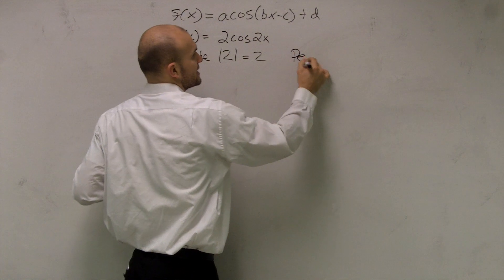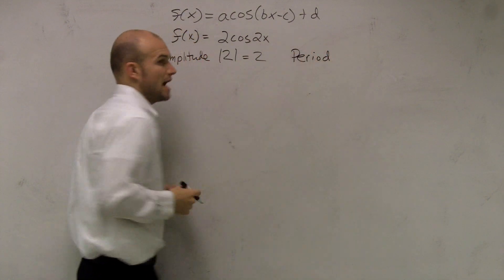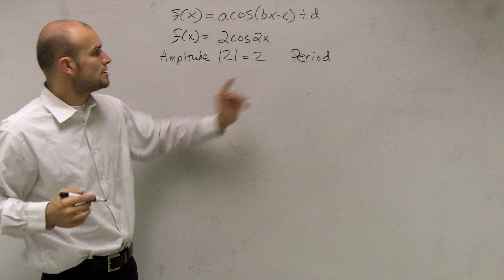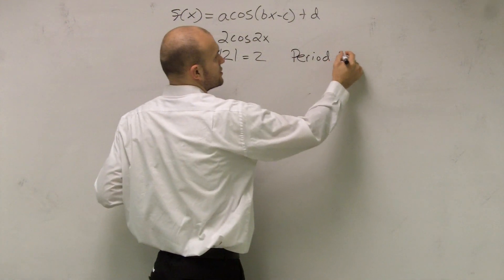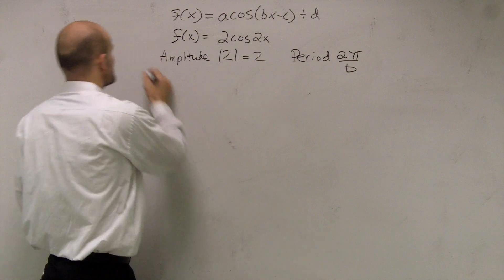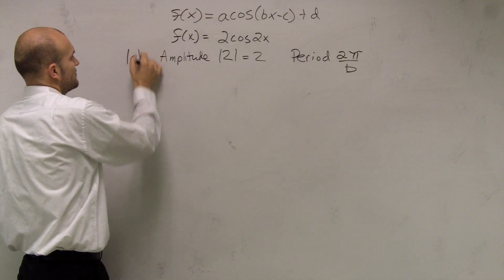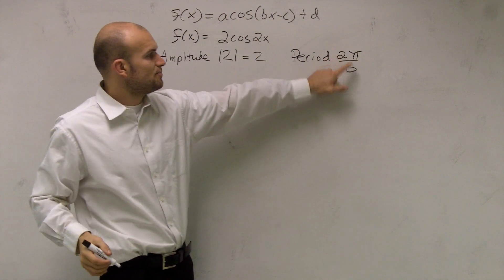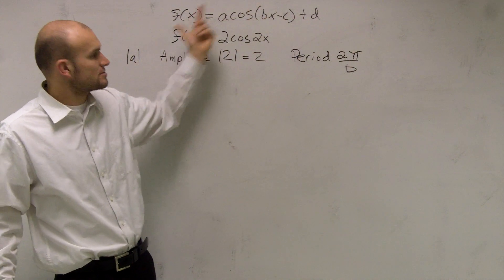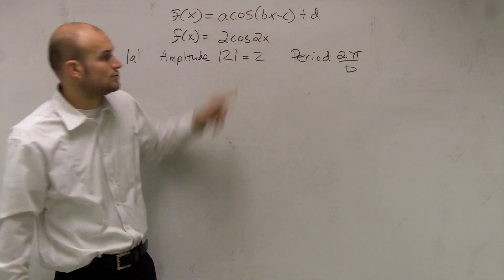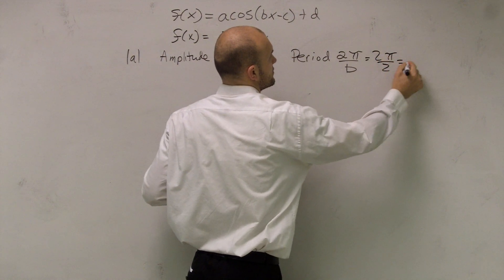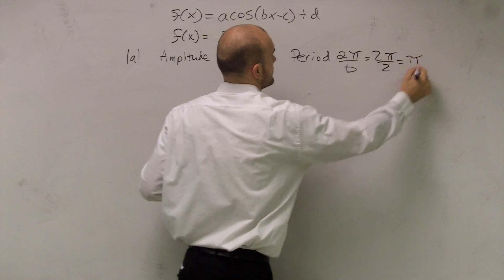Then we need to figure out what the period is. Remember, the period is how long it takes our graph to complete one cycle. Our period is going to be 2 pi divided by B. B is the number in front of X, and here B is 2, so you have 2 pi over 2, which is pi.